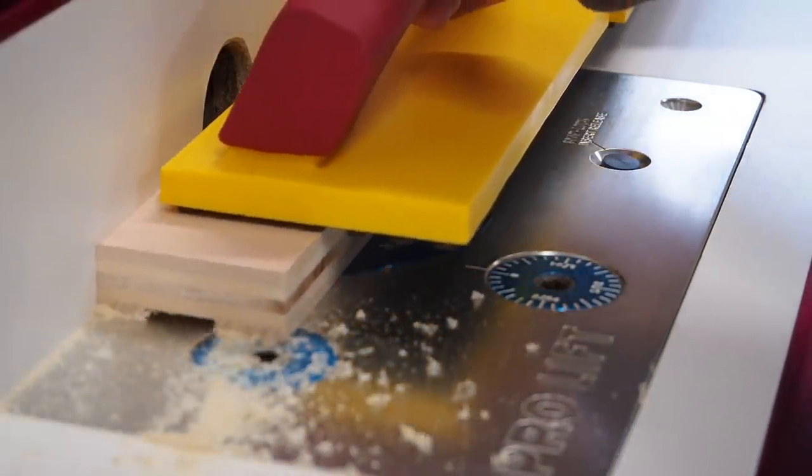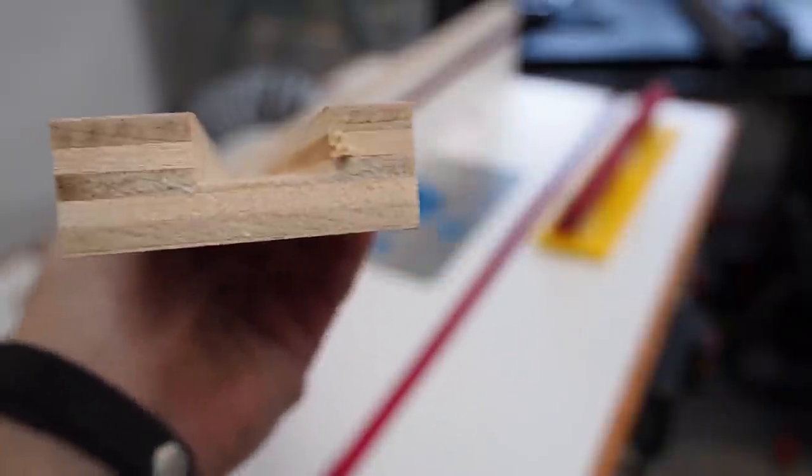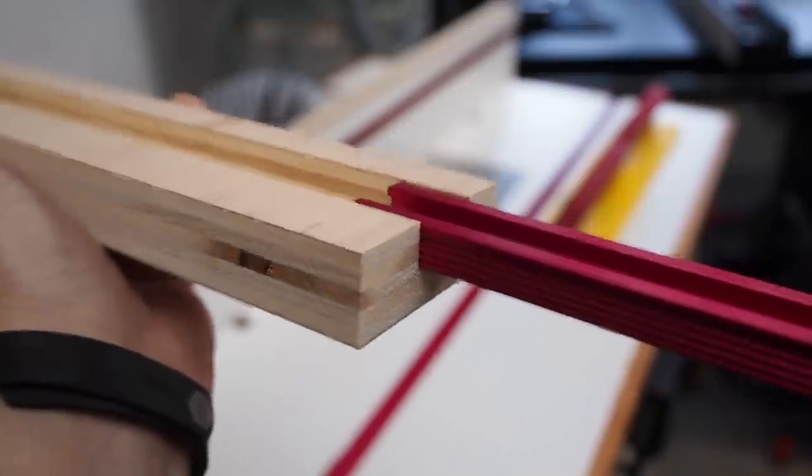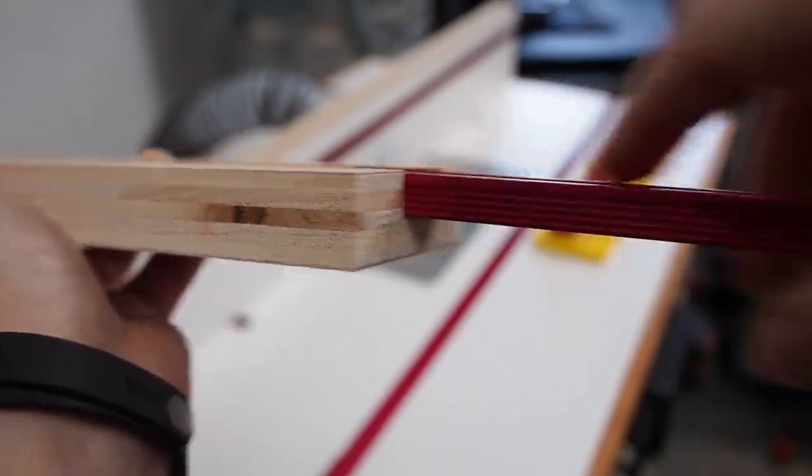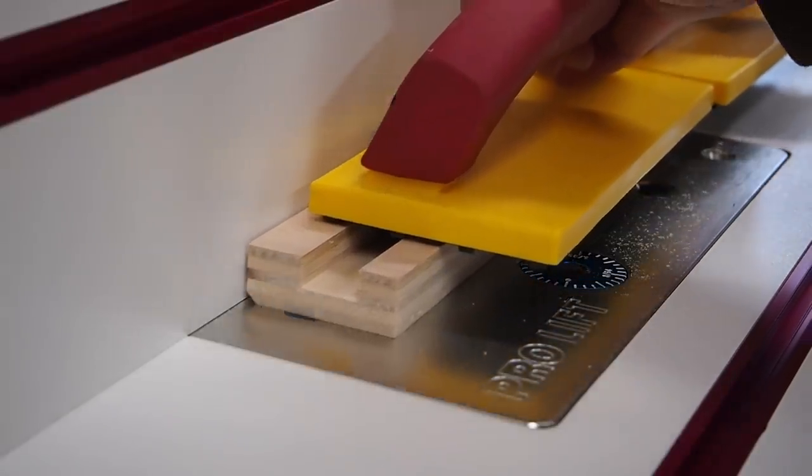Now if you don't have a router table you could also do this at the table saw. I checked the fit and made sure the t-track was below the surface. I then switched over to a chamfer bit to make a small chamfer on the front bottom side.